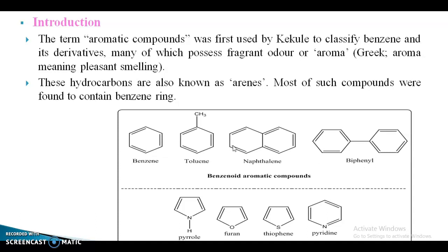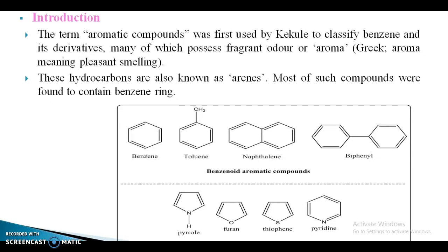When the compound contains a benzene ring, it is aromatic — this is a benzenoid aromatic compound. If the aromatic compound does not contain a benzene ring, it is a non-benzenoid aromatic compound.